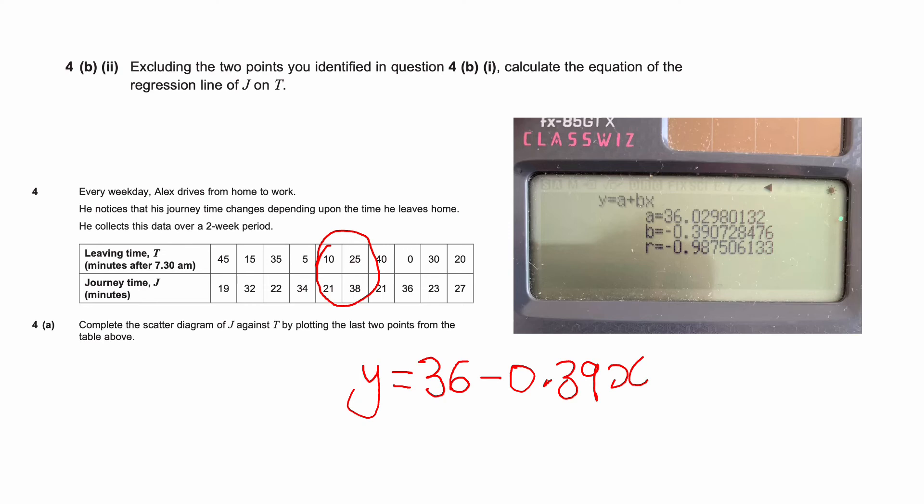Just subbing those A and Bs into here. But actually, because we're not using X and Y, we're using J and T. Let's even swap those over. So J is 36, take away 0.39 T. And that's our equation.